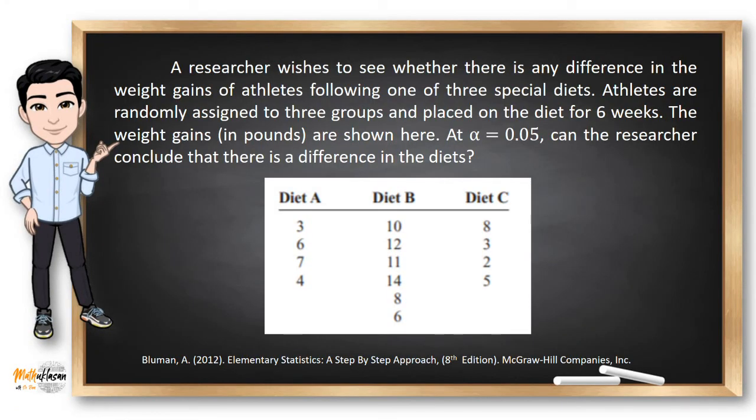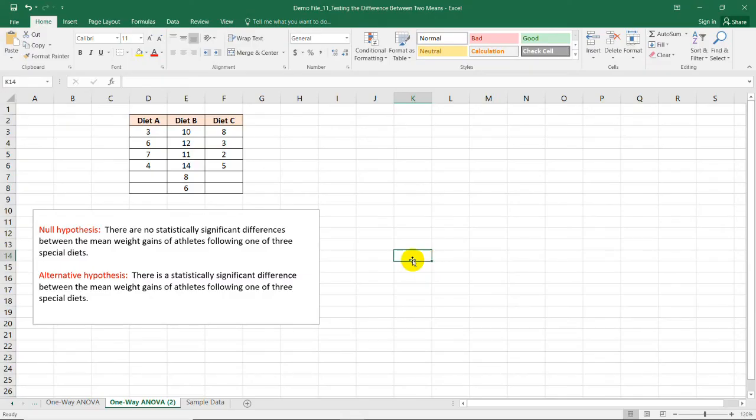In this example, the researcher is probably trying to determine the most effective diet for the athletes. Since we are comparing the three means in their gain, we can use the analysis of variance. For our example, our null hypothesis states that there are no statistically significant differences between the mean weight gains of the athletes, while the alternative hypothesis says there is a statistically significant difference.